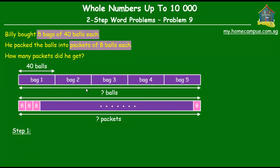So the first step of the solution is to find out the total number of balls. Now, each bag had 40 balls and there were five such bags. So the total number of balls would be 40 times 5. We do the working here on the right side of the screen. So 40 times 5. First we multiply 0 by 5 and we get 0, then we multiply 4 by 5 and we get 20.